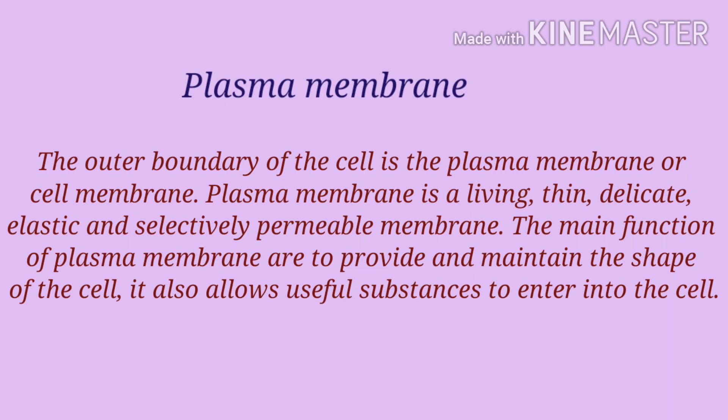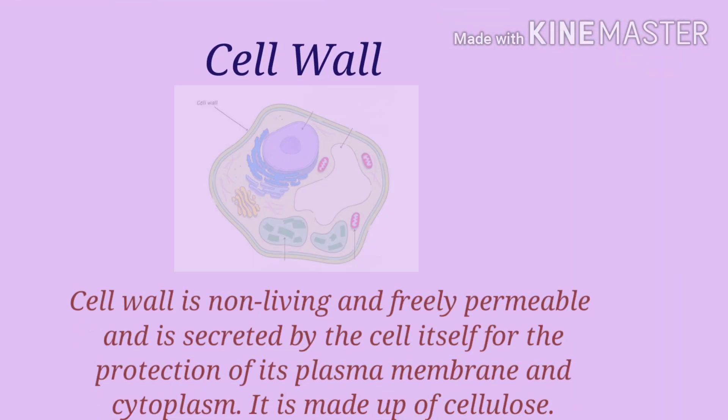It is made up of a bilayer of lipid interspersed with protein. The main functions of plasma membrane are to provide and maintain the shape of the cell. It allows only useful substances to enter into the cell. Next one is cell wall.